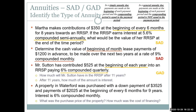A property in Waterford was purchased with a down payment of $3,525 and regular payments of $2,025 at the beginning of every six months for nine years, with interest compounded monthly at 6%. We want the purchase price and the cost of financing — another way of asking how much interest was paid. Payments at the beginning means due; semi-annual payments with monthly compounding — those don't match — so this is a general annuity due.